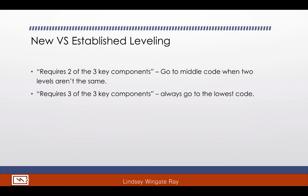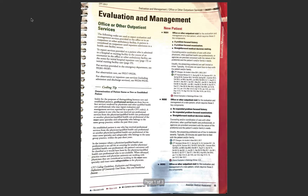Throughout the E&M section, you will see verbiage like 'it requires two of the three key components' — history, exam, and medical decision-making. When it says it requires two of the three, you go to the middle code if there aren't two codes that are the same. If it says it requires three of the three components, you always go to the lowest. Let's take office visits as an example.